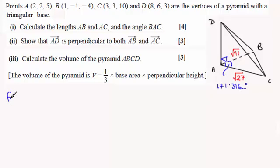In part two we had that the vector AD was OD minus OA, which gave us (6, 4, -2). We can get that length just by doing the modulus of that.